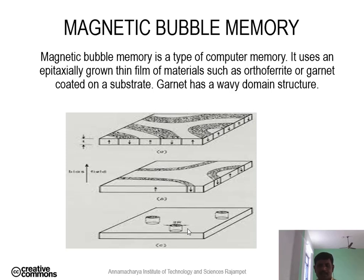The magnetic strips are arranged in two ways: pointing up and pointing down. Pointing down means the magnetic strips are arranged from top to bottom, and pointing up means they are arranged from bottom to top.